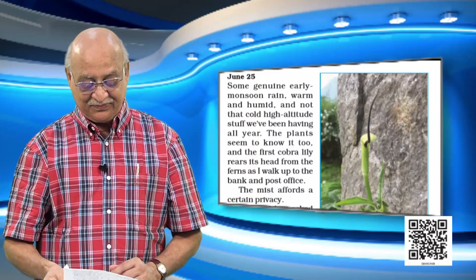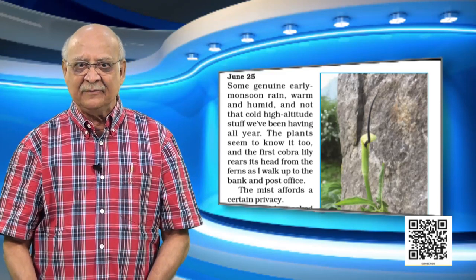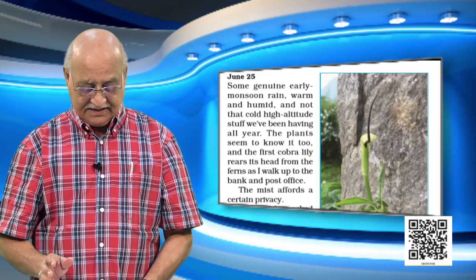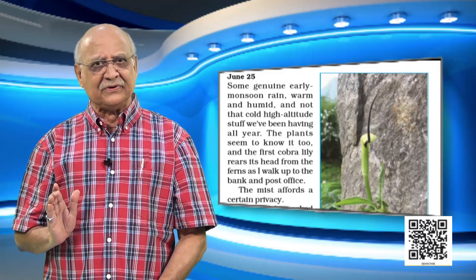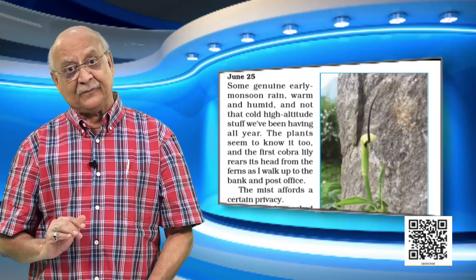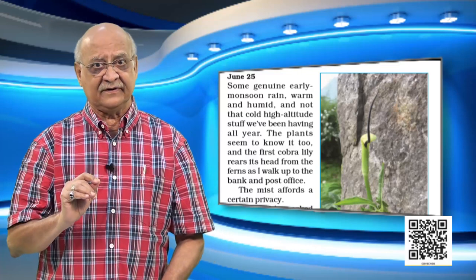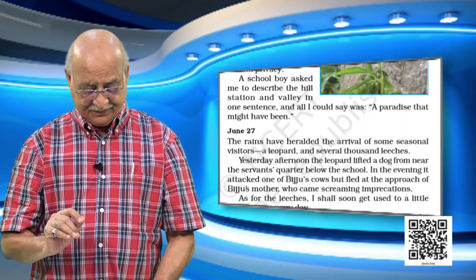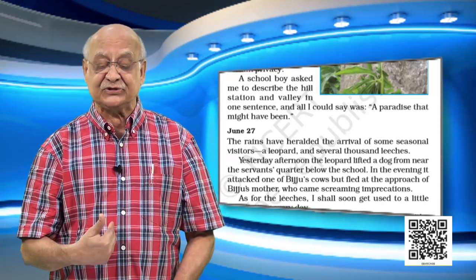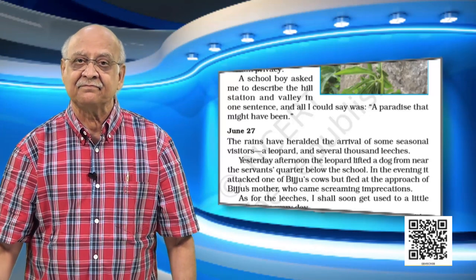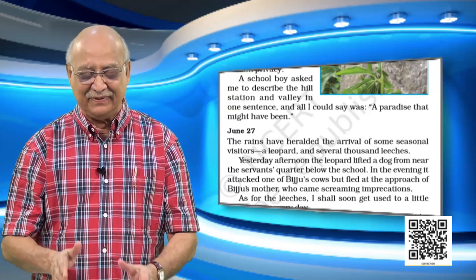Imagine going up the hill, walking there, and suddenly you discover that in this rain a flower is blossoming out from a huge tree. You don't know where the seed was — it must have been there inside the tree itself. But there is this flower and it's called a cobra lily. The mist affords a certain privacy — you become very quiet, all by yourself, nobody around. A schoolboy asked the writer to describe the hill station and valley, and all he could say was: 'a paradise that might have been.' The word equivalent to heaven is paradise.